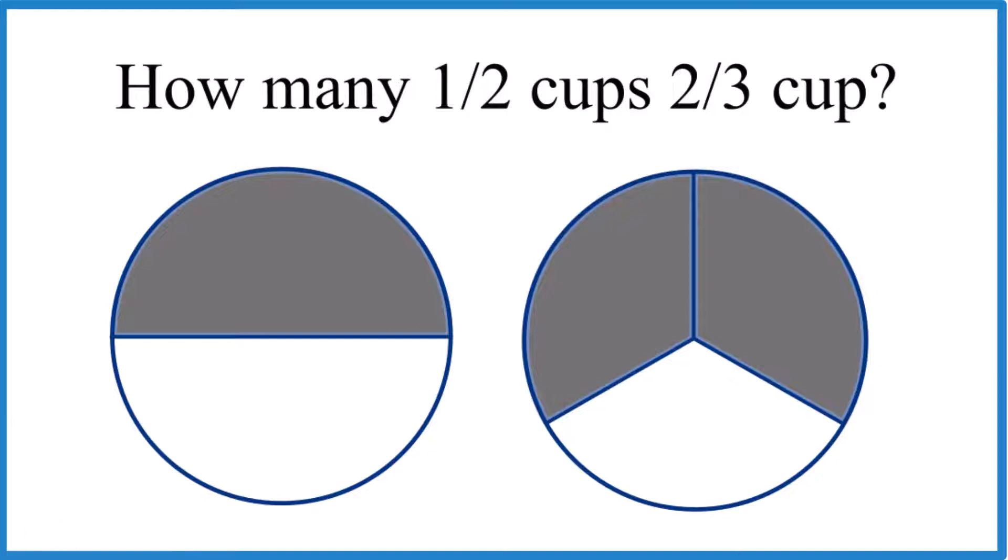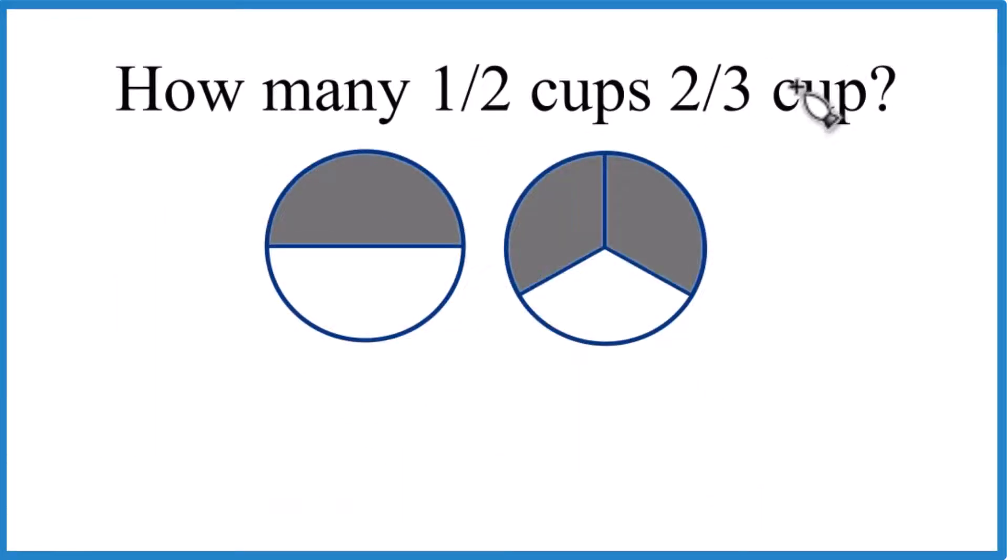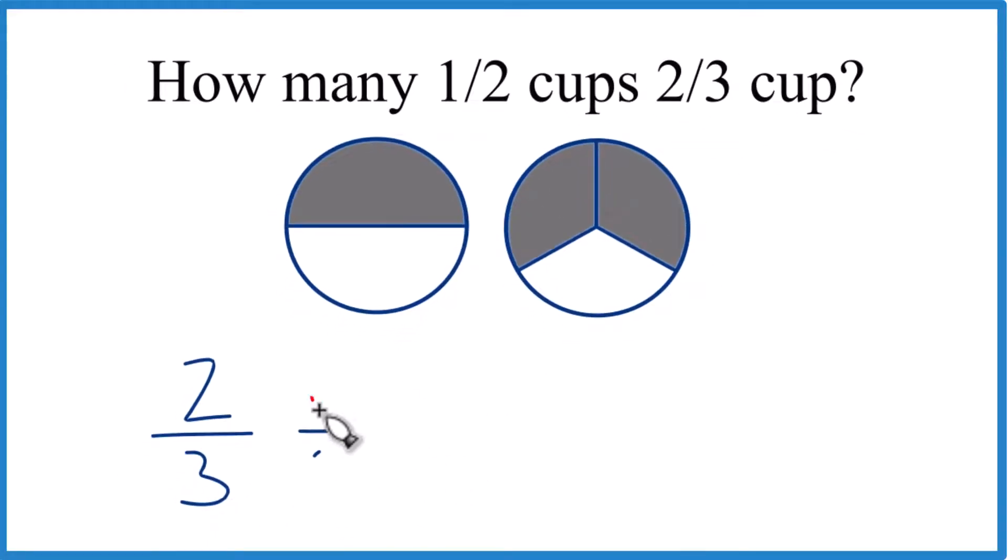Here's the mathematical way to do it. We take our two-thirds cup, and we're trying to see how many times one-half goes into the two-thirds, so we're going to divide by one-half.